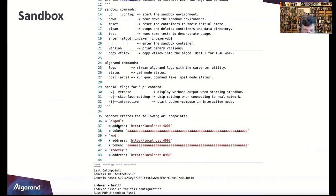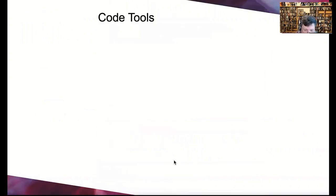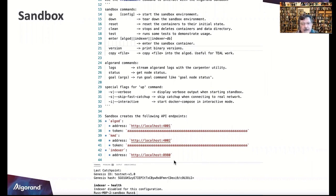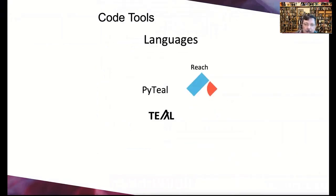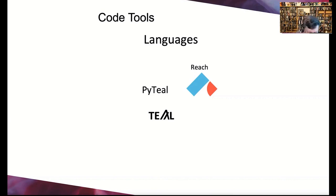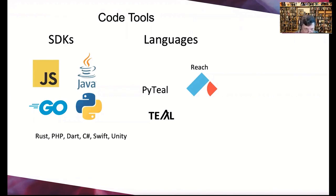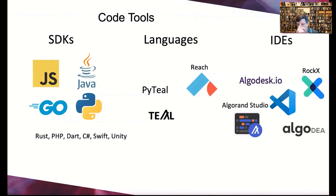The readme file shows addresses: localhost 4001 and 8980 for the indexer — those are the port numbers and tokens you put in your code. Code tools include Reach — a very cool product where you write in a higher-level language like JavaScript and deploy to multiple blockchains with a flip of a switch in settings, going to Ethereum or Algorand with the same code base. Analogous to cross-platform development with React Native, Xamarin, or Unity. We also have PyTEAL, TEAL, SDKs, and lots of IDEs.